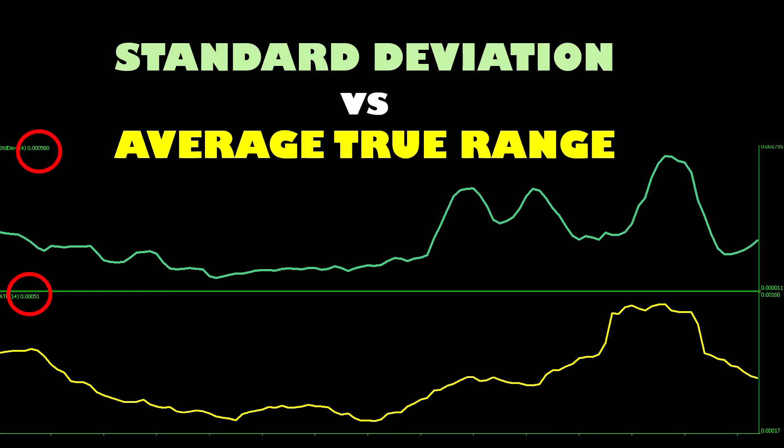And if we check the readings of the indicators in our example here, the standard deviation is reading at 0.00056 and the ATR is reading at 0.00051. So those readings are not worlds apart in terms of what they're actually going to do for you. This means that one of them can be used as a substitute for the other.